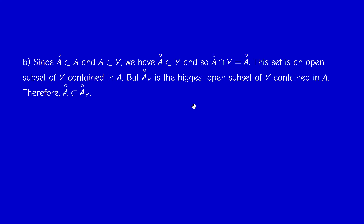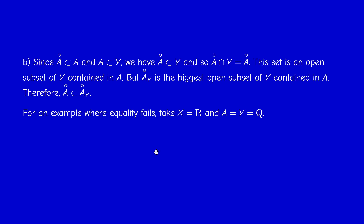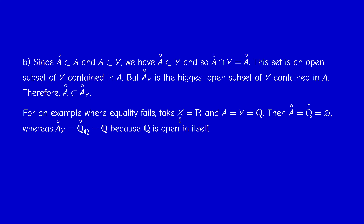Now we have to give an example where this inclusion is strict. Take X = ℝ, Y = A = ℚ (the rational numbers). What is A°? The interior of the rationals in ℝ is empty. However, A°_Y = Q°_Q, since A equals Y here. This is the interior of ℚ relative to itself. And ℚ is open in itself, so this set is just ℚ. So we have the empty set on one side and ℚ on the other — we don't have equality.